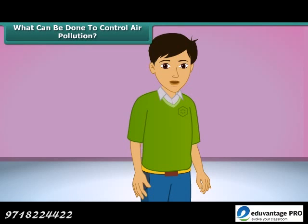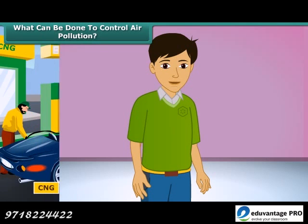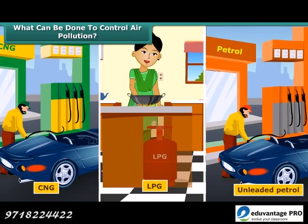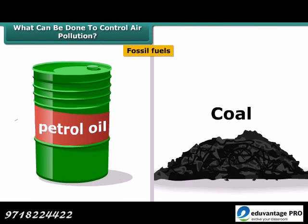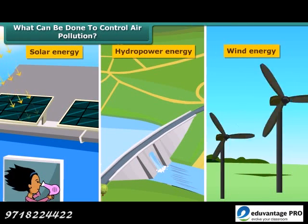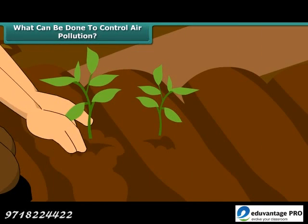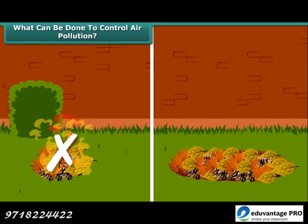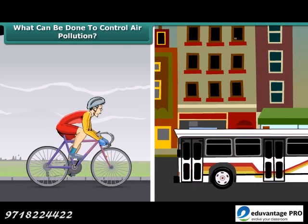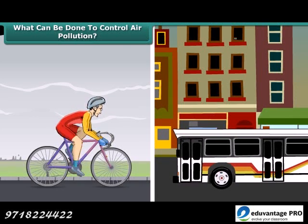Students, can you tell what we should do to reduce air pollution? There are many things we can do. We can use clean fuels such as CNG, LPG, and unleaded petrol. Instead of fossil fuels, we can use solar energy, hydropower, and wind energy. We can also plant new trees. Rather than burning dry leaves, we can put them in a compost pit. We can walk more, switch over to bicycles for covering small distances, and use public conveyances.